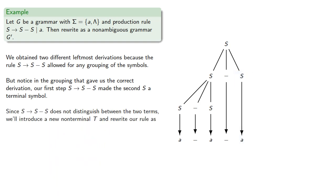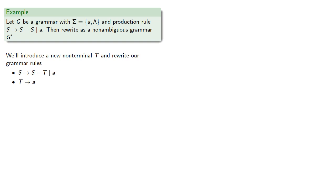Now since our original production rule S produces S minus S does not distinguish between the two terms, we'll introduce a new non-terminal T, and we write our rule as S produces S minus T. And since T has to be a single symbol, then we also need the rule T produces a. And so we'll introduce a new non-terminal symbol T and rewrite our grammar rules.